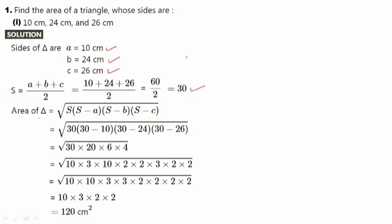Therefore, the area of the triangle using Heron's formula will be the square root of S × (S minus A) × (S minus B) × (S minus C). S is 30, A is 10, B is 24, and C is 26. So we get: 30 × (30 minus 10) × (30 minus 24) × (30 minus 26) = 30 × 20 × 6 × 4. Factorizing and finding the square root, the answer equals 120 centimeter square. This is your first answer.